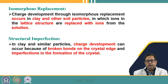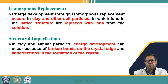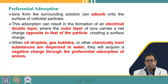Isomorphous replacement means that ions present in the lattice structure of particles — for example in clay or soil particles — may be replaced with ions from the solution. Structural imperfections, such as broken bonds on crystal edges or imperfections in crystal formation, can also lead to charge development on particles like clay.